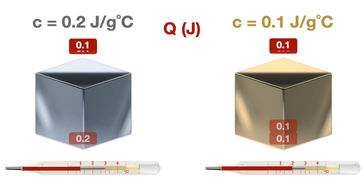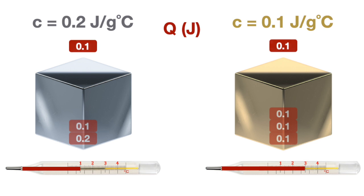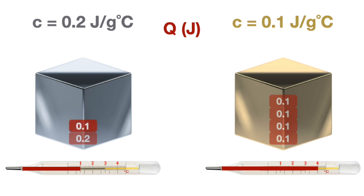As they absorb another 0.1 joules of energy, the gold increases by another degree Celsius, but the silver does not. Then absorbing another 0.1 joules, the gold increases by yet another degree Celsius, and the silver — because it now has 0.2 more joules of energy — increases by another degree Celsius. Even though they both absorbed the same amount of energy, the gold with the lower heat capacity increased by 4 degrees Celsius, whereas the silver with the higher heat capacity only increased by 2 degrees Celsius. The lower the heat capacity, the faster something will heat up.